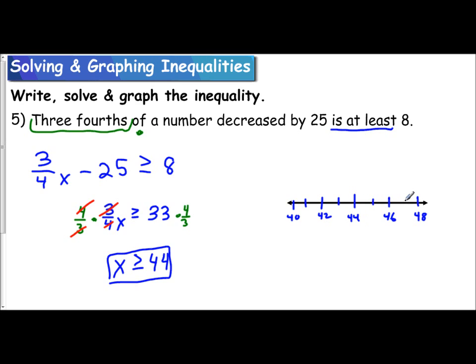And then if I want, I can even put dashes in the middle to represent the ones. And so if I have x is greater than or equal to 44, that'll be a solid circle on 44 with the arrow going to the right.